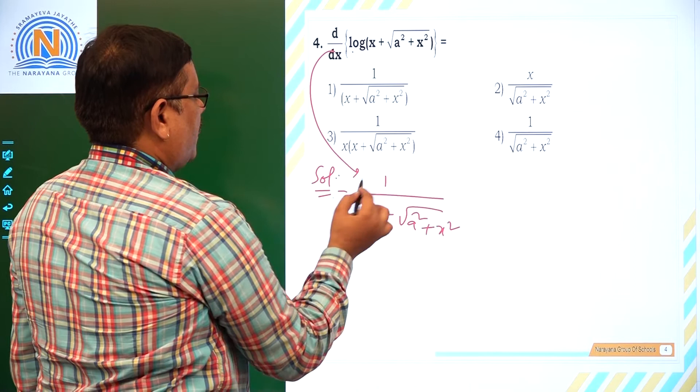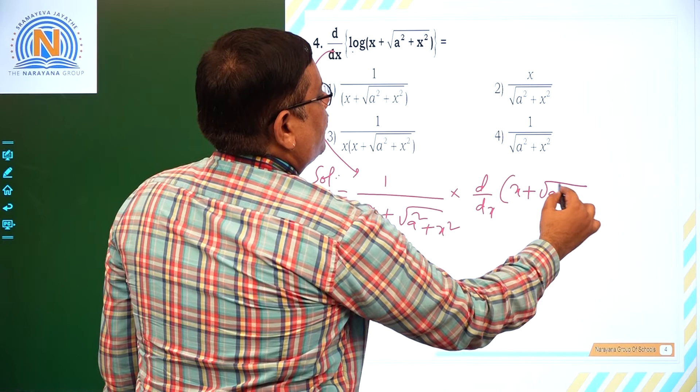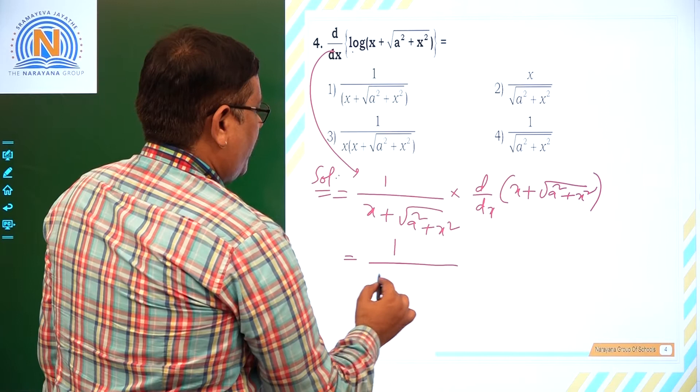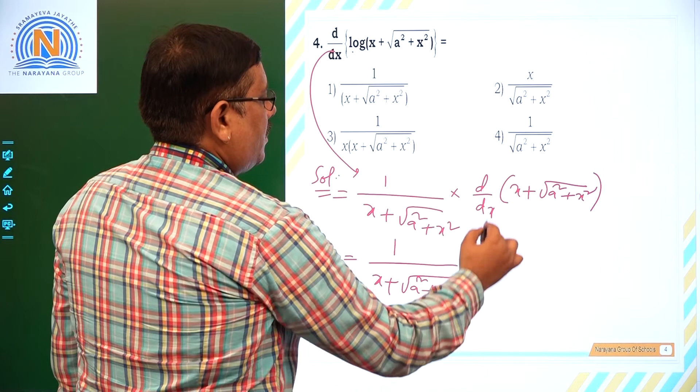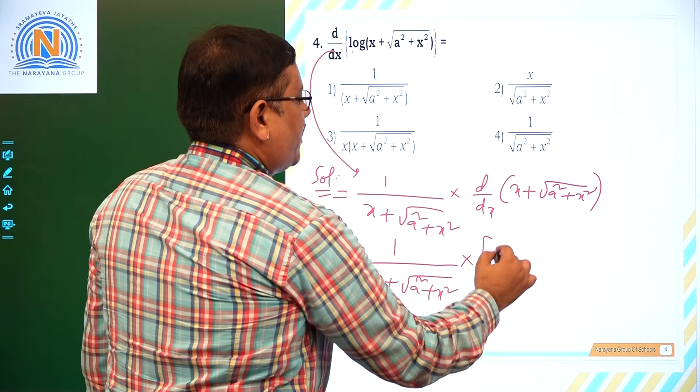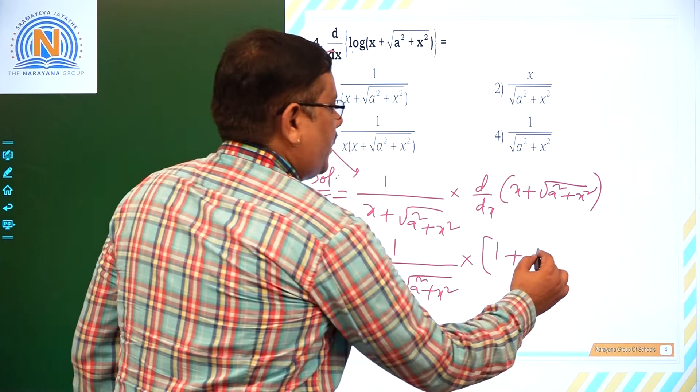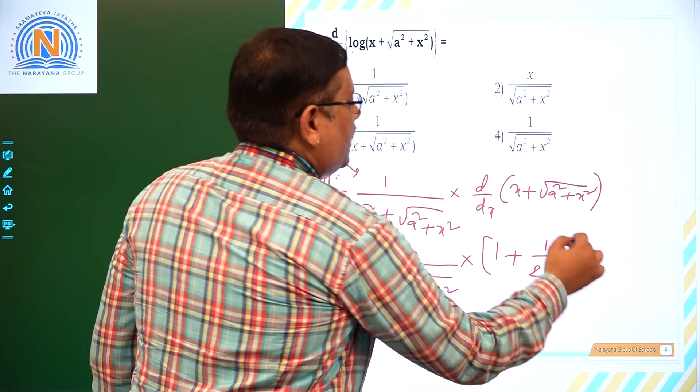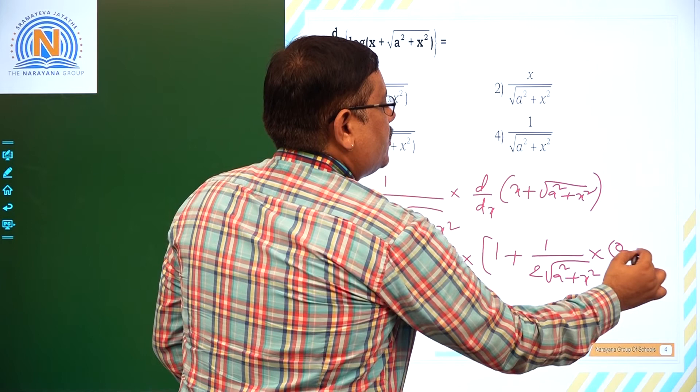The inner function is x + √(a² + x²). By chain rule: derivative of x is 1, and derivative of √(a² + x²) requires chain rule again — that is (1 / (2√(a² + x²))) times the derivative of a² + x², which gives 0 + 2x. So the derivative of √(a² + x²) = x / √(a² + x²). The 2s cancel.